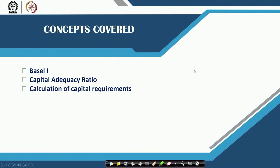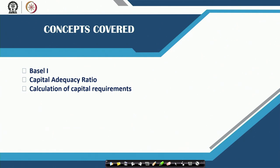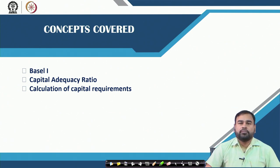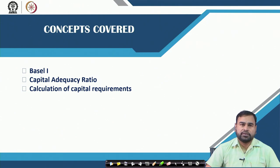In today's class we will be discussing about the regulatory capital ratio, or regulatory capital adequacy ratio, or regulatory capital requirements that banks should always hold. This particularly started with Basel 1, which was a kind of regulatory norm established by the BIS — Bank for International Settlement.